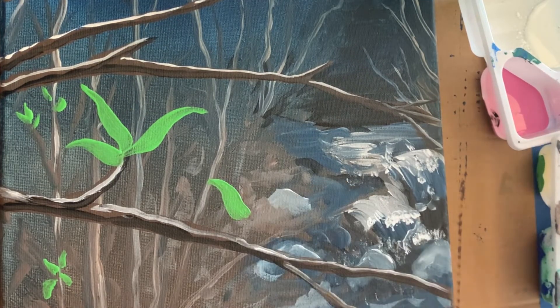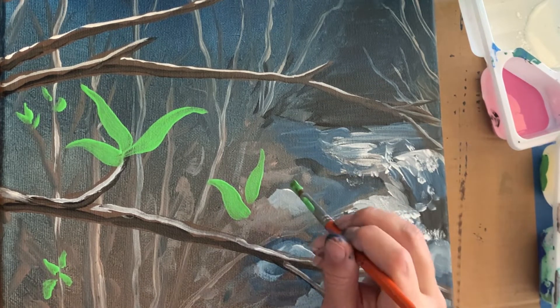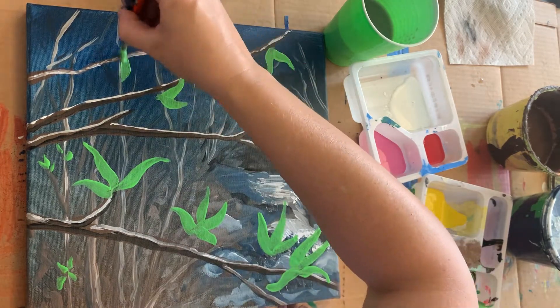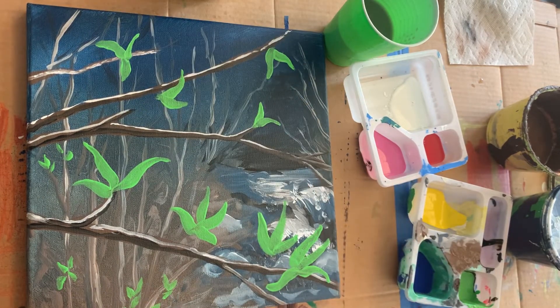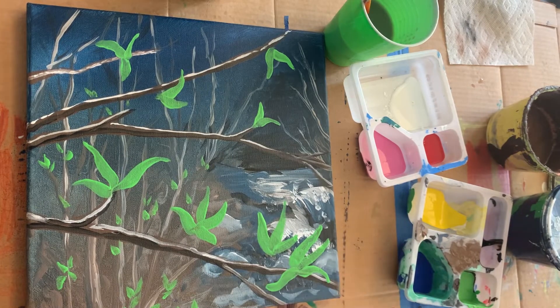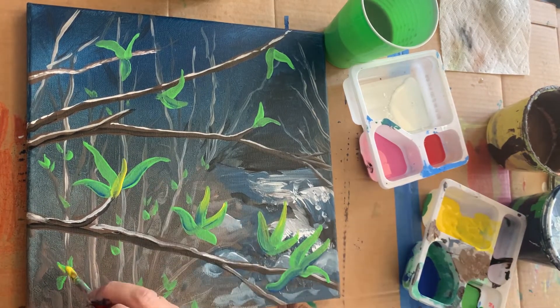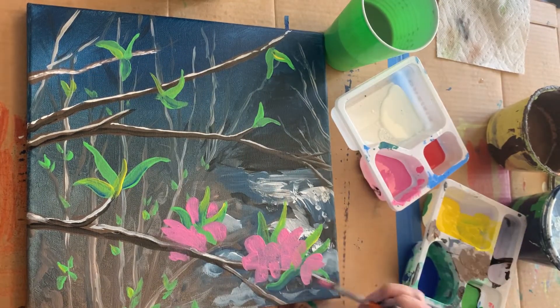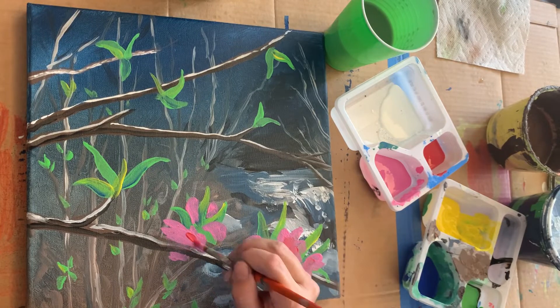Flowers and leaves are shapes that brushes kind of automatically want to make just without even putting in any effort. So it's a fun thing to paint when you're trying to relax and you're wanting something that's sort of a break. You just trust the brush and relax and don't try to make it too precise, and then it can be really really fun. I especially loved painting the leaves for this one.